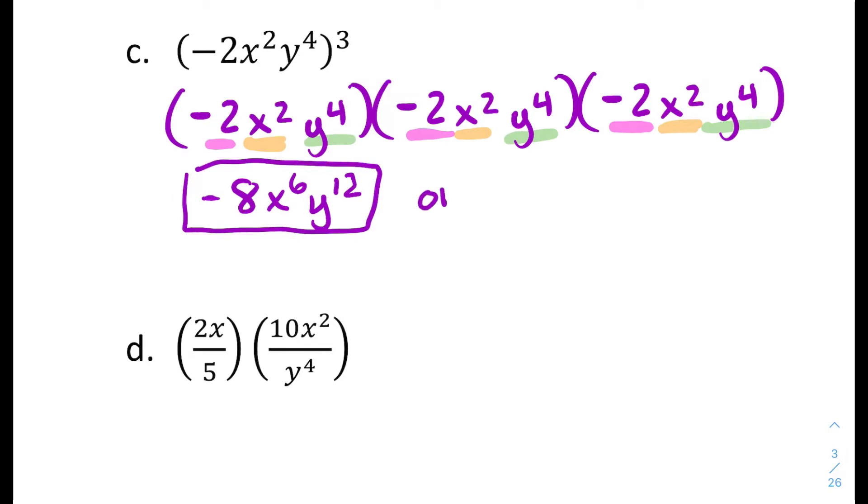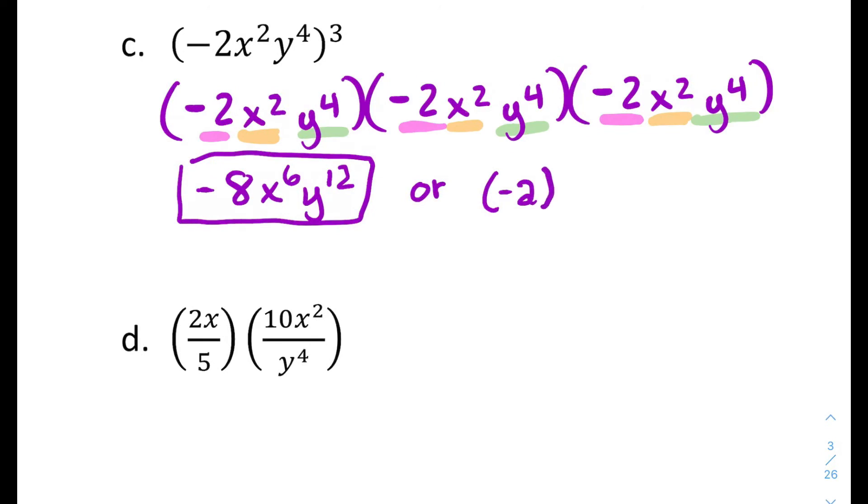y to the fourth times itself four times would give you a total of 12 factors of y. Or you could use your exponent property that says powers raised to a power, you can multiply those powers together. So you'd have to make sure to put the negative two in parentheses to include the negative. That's the first power times three. And then x is squared times three. And then y is to the four times three power. And then you'd end up with the same result.